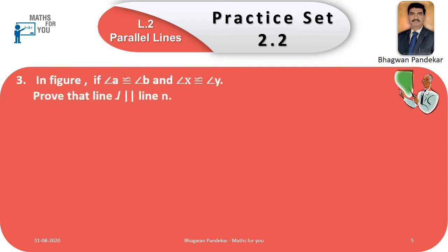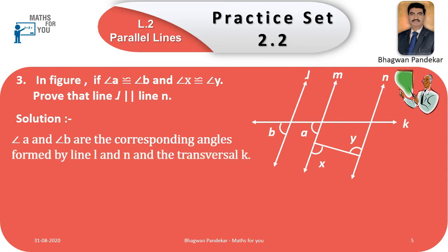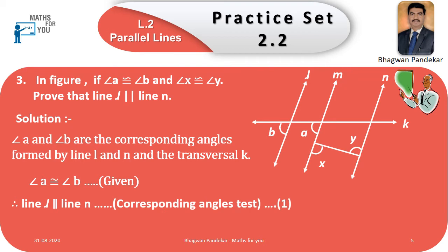Example number three: In the figure, if angle A ≅ angle B and angle X ≅ angle Y, prove that line l is parallel to line n. Solution: Angle A and angle B are the corresponding angles formed by line l and n and transversal k. Angle A ≅ angle B is the given information. Therefore, line l is parallel to line n by the corresponding angle test. This is equation one.